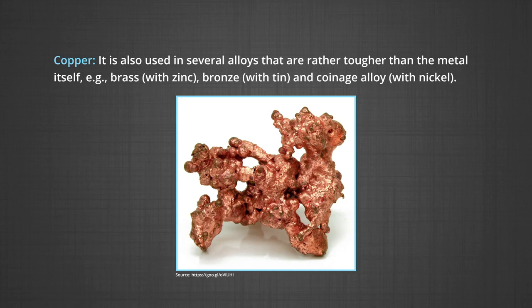Uses of copper, we know copper is used for making wires, used in electrical industry and for water and steam pipes. It is also used in several alloys that are rather tougher than the metal itself. For example, brass, alloyed with zinc, bronze, alloyed with tin and coinage alloy, alloyed with nickel.